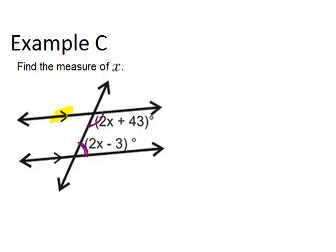The lines are marked as being parallel, so that means those same side interior angles have to be supplementary. So, I can set up an equation to solve for X. These two angles have to add up to be 180 degrees. That's what supplementary means. So, that means that 2X plus 43 plus 2X minus 3 has to equal 180 degrees.